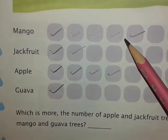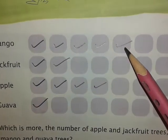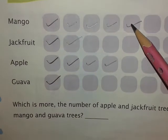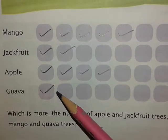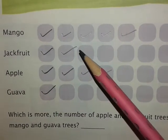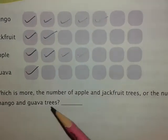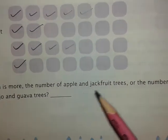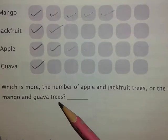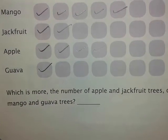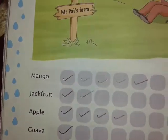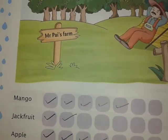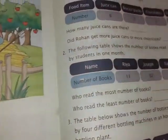Now the number of mango and guava trees: mango is 5 and guava is 1, so 5 and 1 is 6. The number of trees is the same — apple and jackfruit is also 6 and mango and guava is also 6. So our answer will be equal — there is an equal number of trees. Today we will also do page 159.